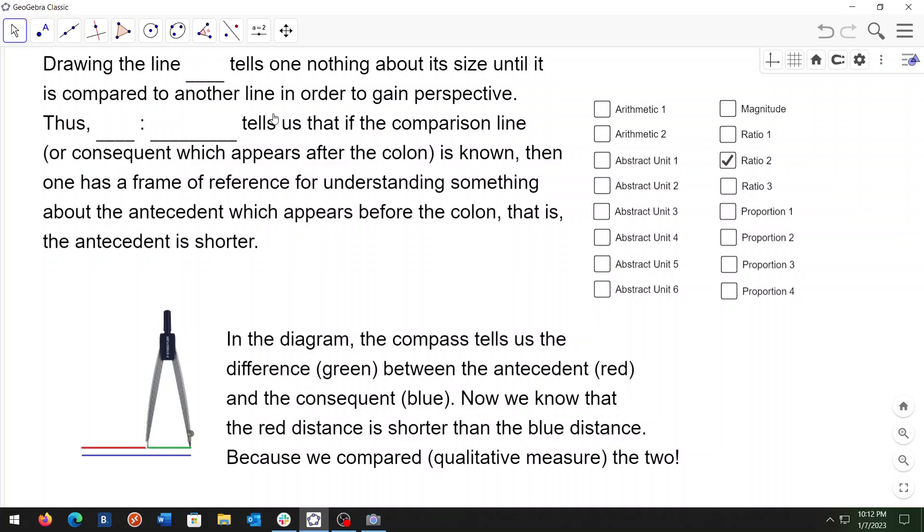In the diagram, the compass tells us the difference, green, between the antecedent red and the consequent blue. Now we know that the red distance is shorter than the blue distance because we compared, using a qualitative measure, the two.